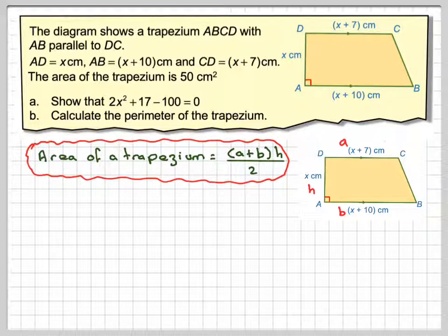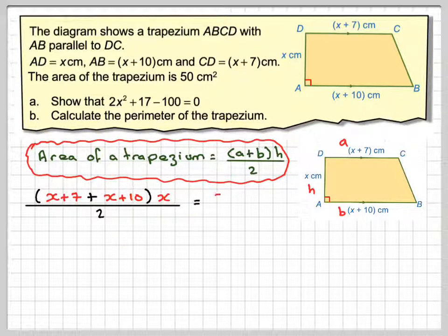This information is given on the formula sheet for IGCSE. Using the information we have in the question, X plus 7 plus X plus 10 times the height X, all divided by 2, must be equal to 50. Multiplying the 2 up and simplifying, X plus X is 2X, and 7 plus 10 is 17, we get 2X plus 17 times X is equal to 100.